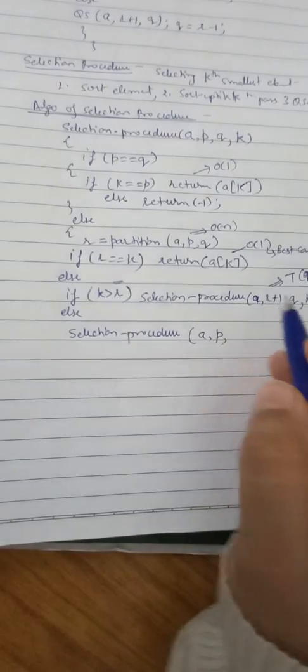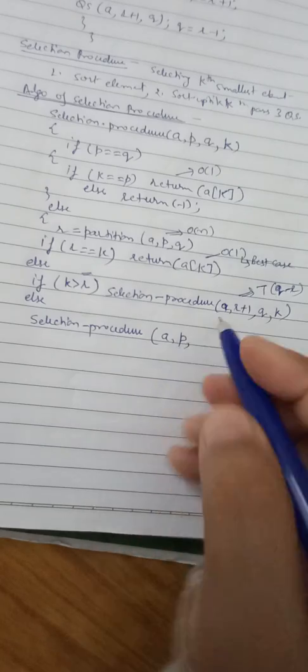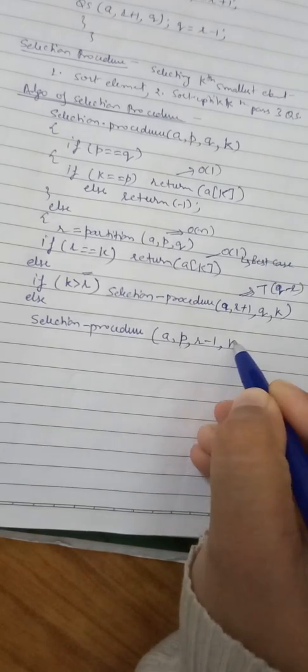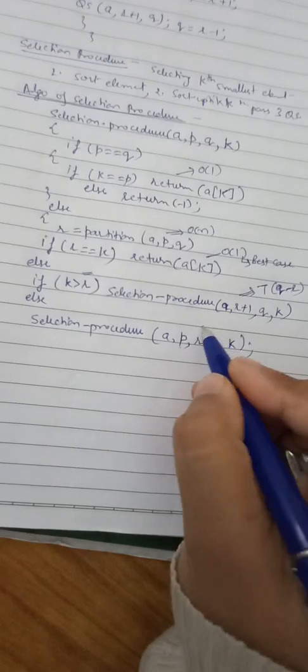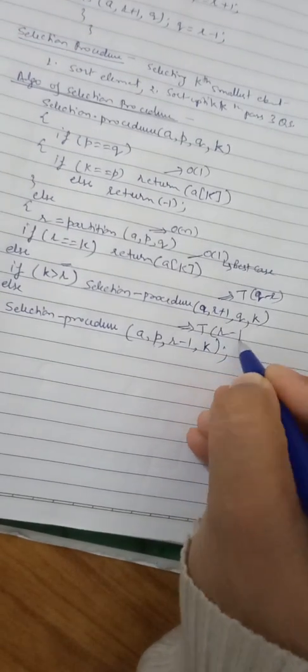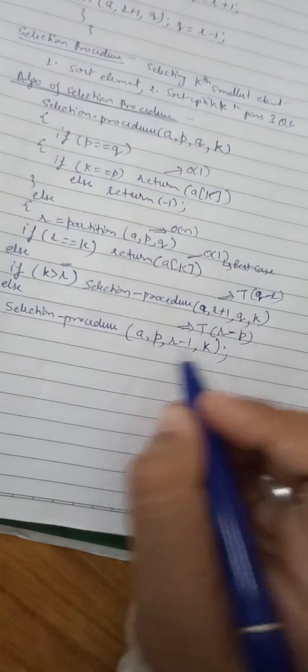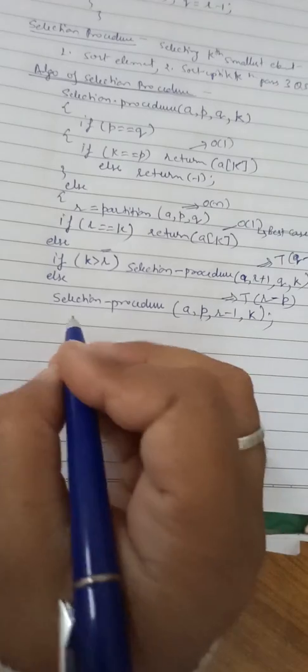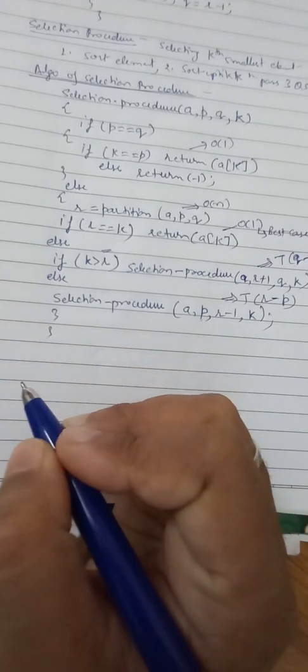Otherwise, if k is not greater than r, we call selection procedure on subarray a from p up to r minus 1, still searching for k. This takes time T(r minus p) because r is the partition and we go back to the first element.